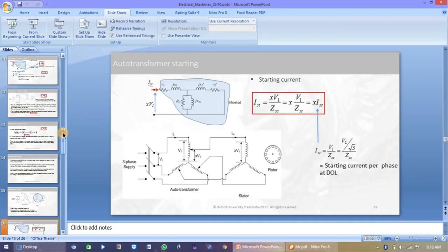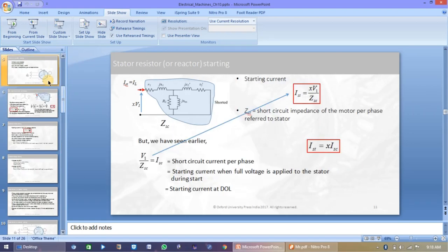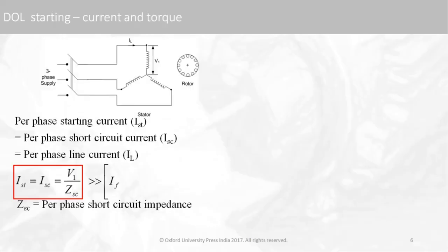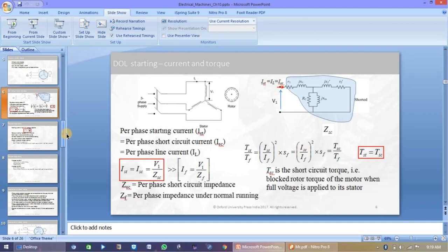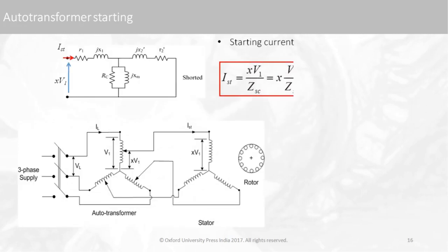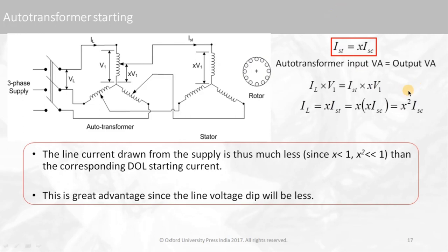To recall, in the DOL starter I_start = I_sc, given by Z_sc. But in the case of auto transformer starting, the x² term appears. So in the case of auto transformer starting, the current is reduced compared to DOL starting — and this is the advantage of the reduced voltage technique.